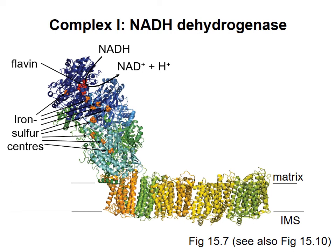Ultimately, the electrons are acquired by coenzyme Q in the inner mitochondrial membrane. The energy from this process is used to move four protons from the matrix to the intermembrane space.